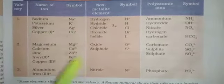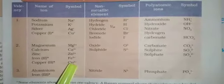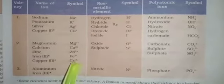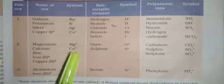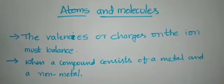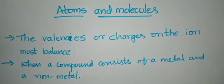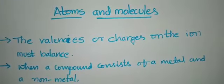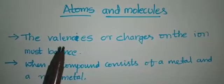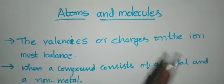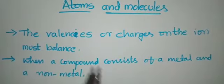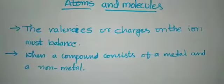If it is 2, it means it has 2 positive ions; if it is 1, it shows it has 1 positive ion. The rule you have to follow while writing a chemical formula is: the valencies or the charges on the ions must balance.